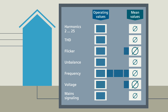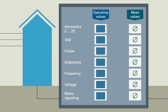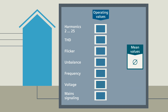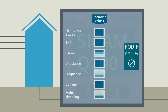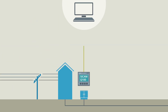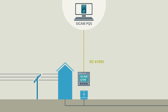The CCAM-Q100 packs all mean values calculated within a likewise parameterizable time period into a PQDIF file conforming to IEEE 1159. For further ongoing grid quality evaluation, the CCAM-Q100 sends this PQDIF file via IEC 61850 to a higher-level system called CCAM-PQS.